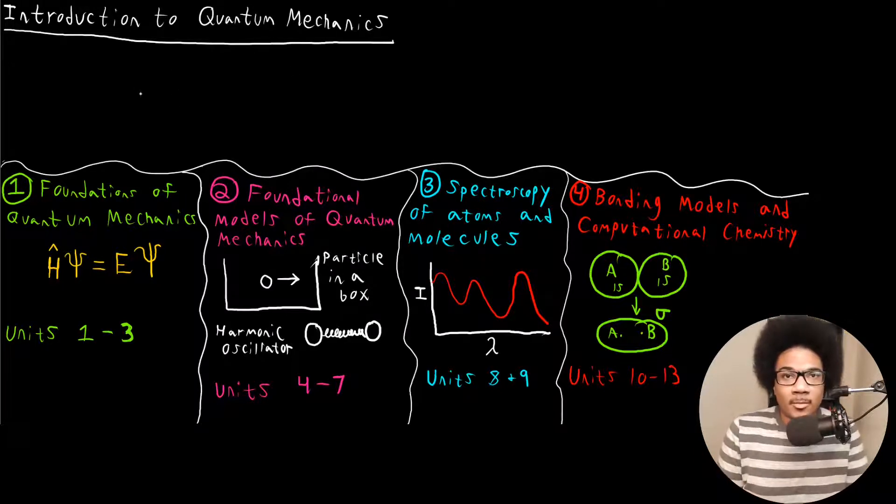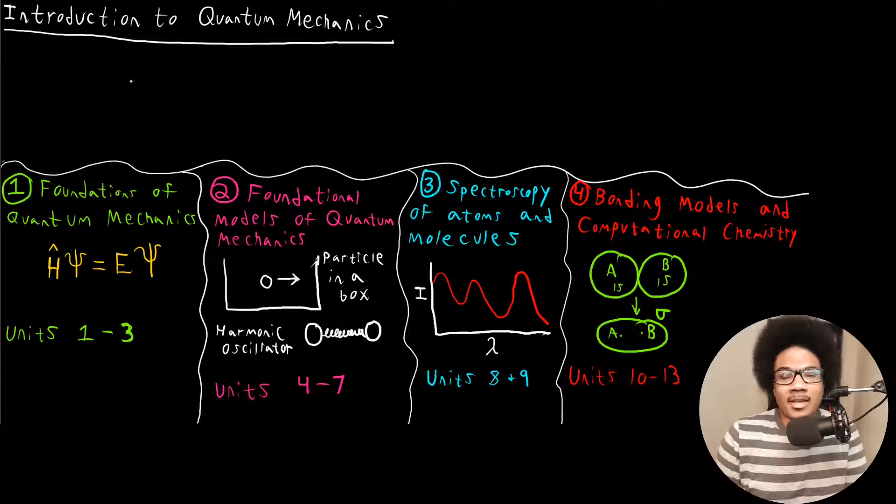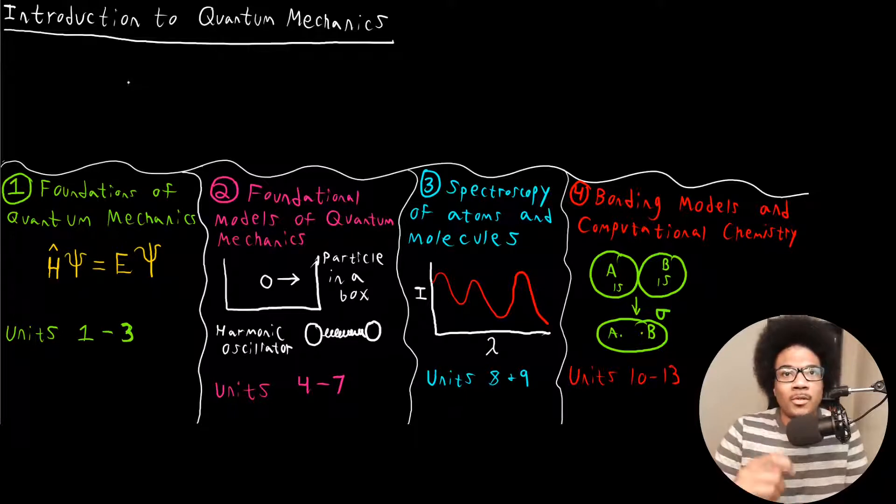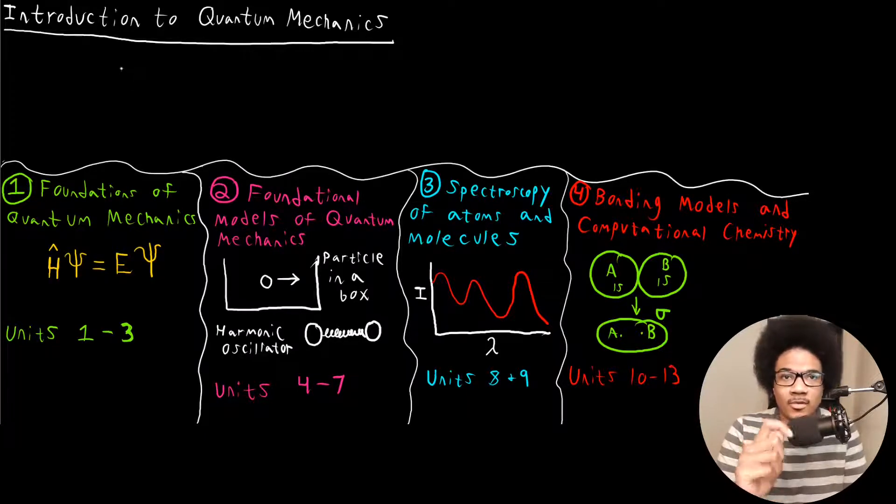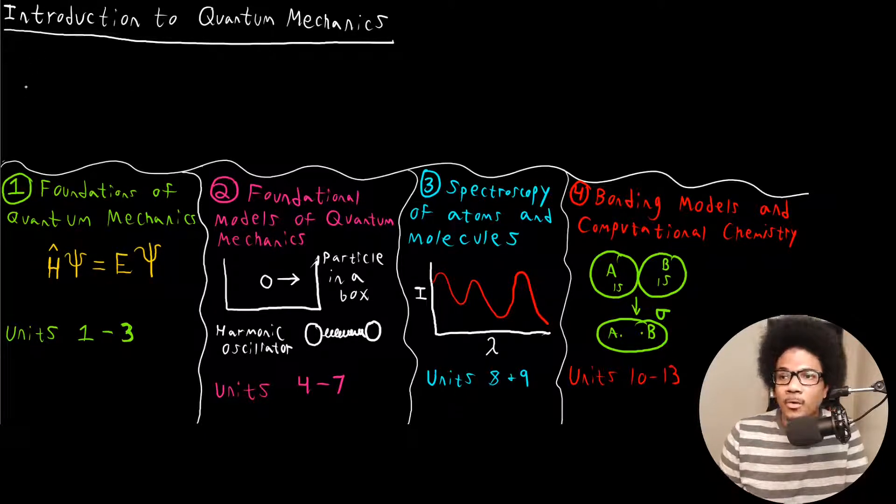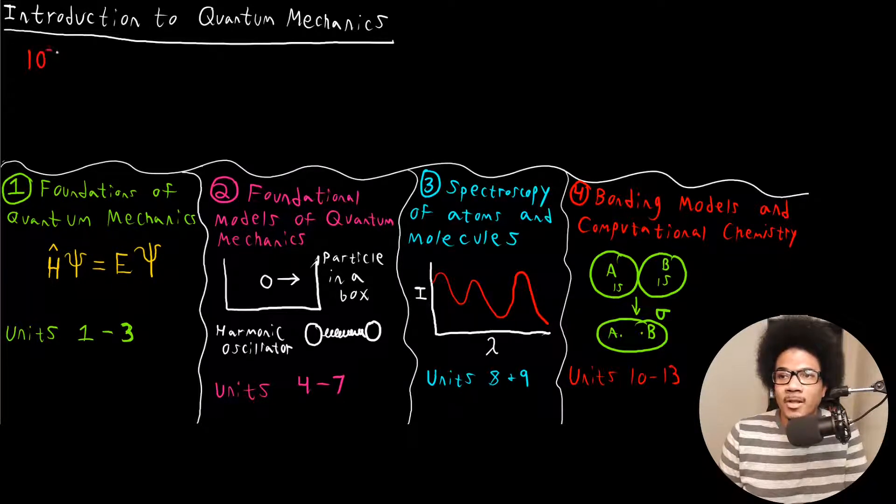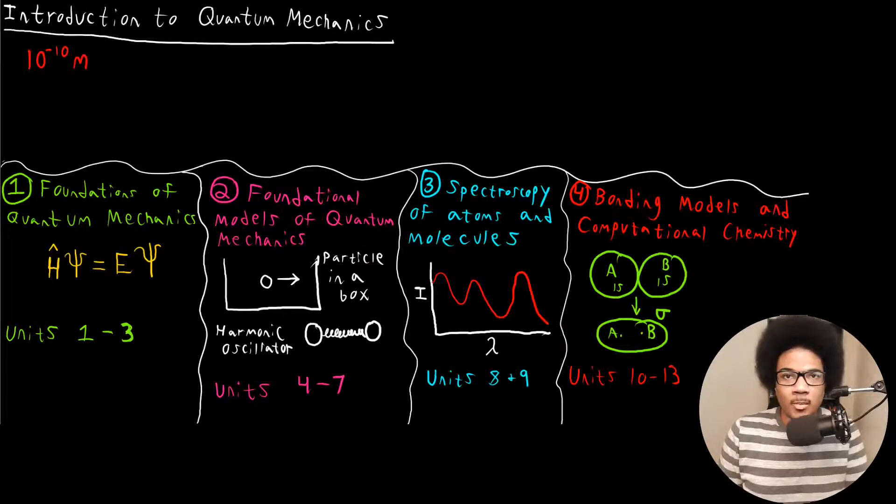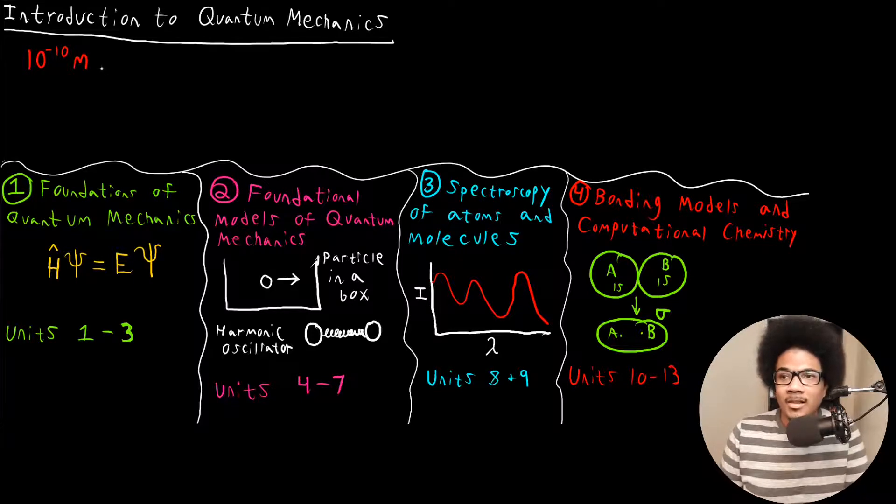So first, what is quantum mechanics? Quantum mechanics is the physics concerned with really small particles, subatomic particles on a really small length scale. So by small length scale, we're talking about like 10 to the minus 10 meters. So there's a really small subatomic length scale.